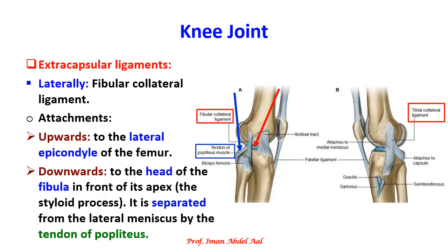The third extracapsular ligament is the fibular collateral ligament. It is attached upwards to the lateral epicondyle of the femur. Downwards, it is attached to the head of the fibula in front of its apex. It is separated from the lateral meniscus by the tendon of the popliteus muscle.